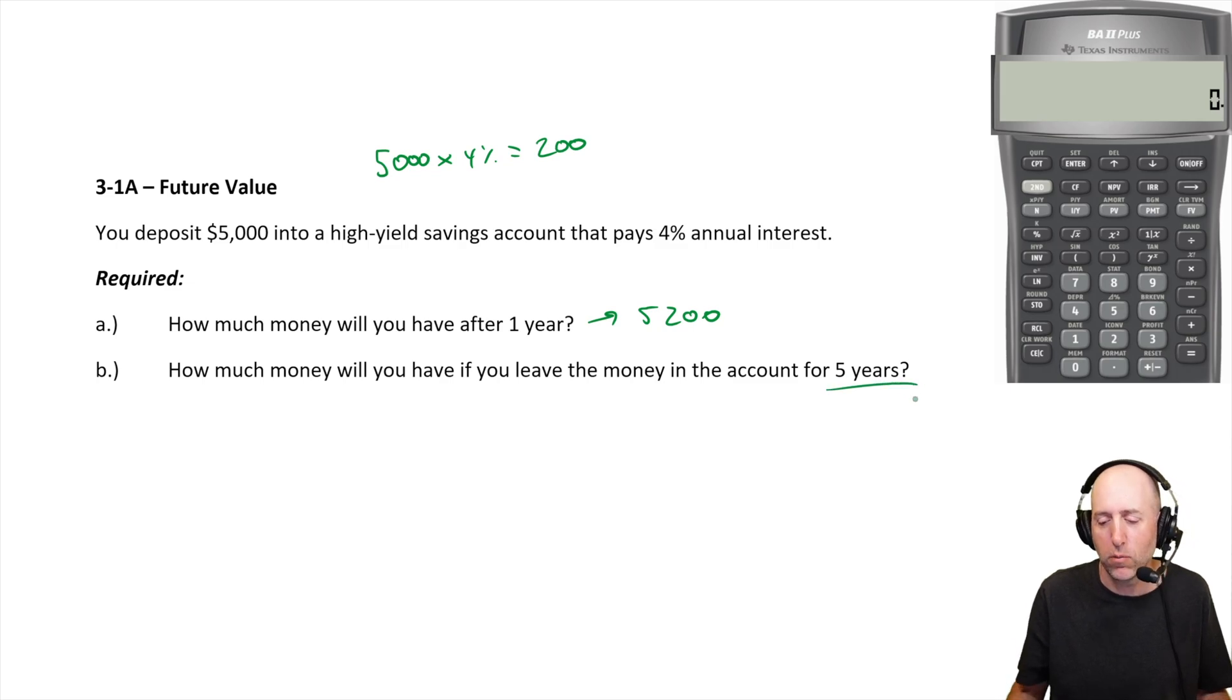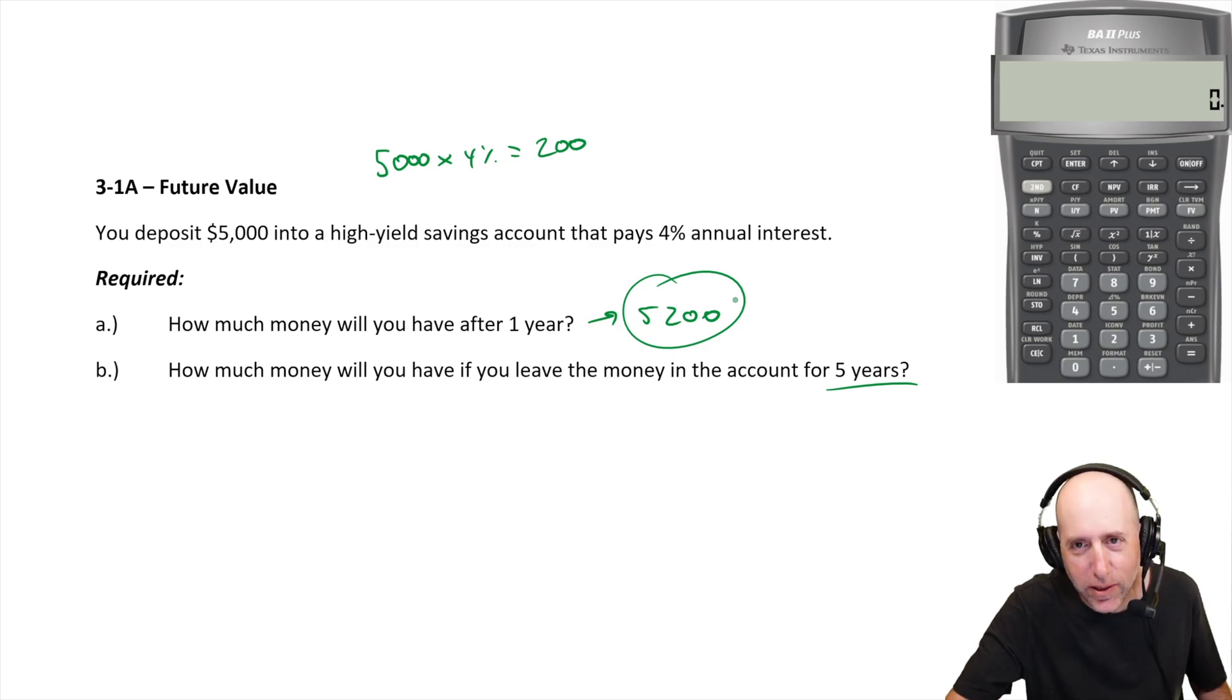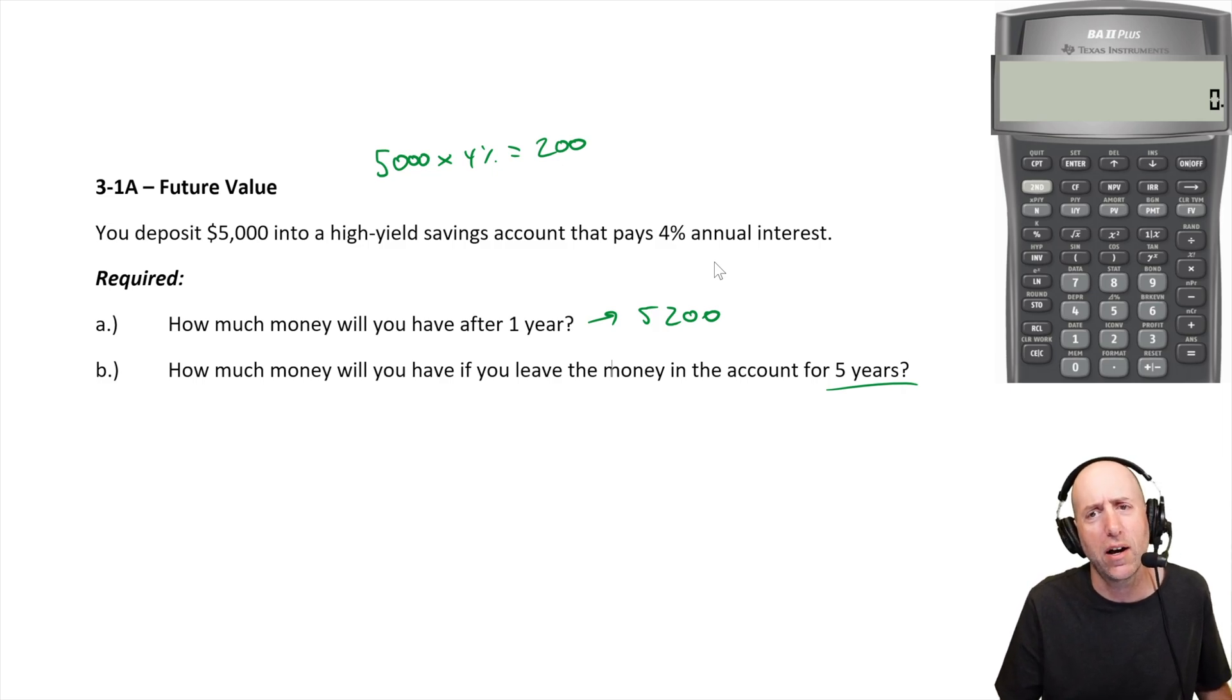But it could ask what's that going to grow to over five years. And it's not as simple as saying, well, it's $200 in interest every year. So five years from now, that'll be $1,000 in interest, because after year one, we have 5,200 in the account and that 5,200 grows at 4%. This is the concept of compound interest. I'll show you to solve this in a financial calculator in a minute, but I would never solve this one with a financial calculator. I would do it by hand. And here's how you would do this by hand.